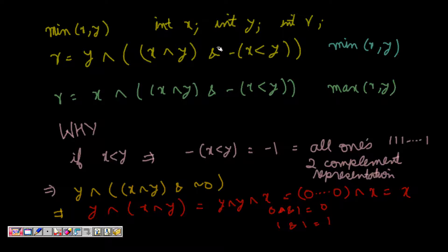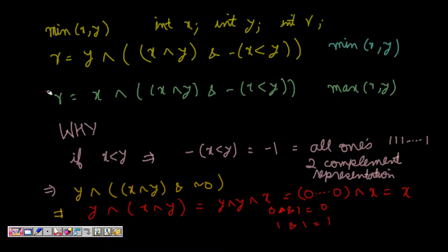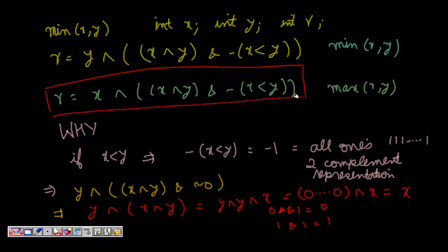Here is the expression for the minimum — it looks complicated, but we will try to see how it works. The expression is: r = y XOR ((x XOR y) AND -(x < y)). Similarly, the expression for maximum uses the same idea. Let's see how it works.